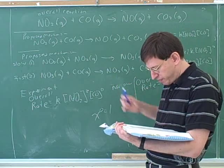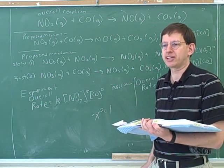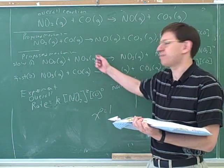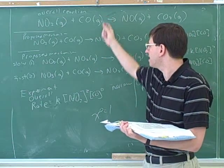So what are the steps for checking a proposed mechanism? First, make sure the elementary steps add up to the overall reaction. We practiced that earlier. Actually, we were lazy and we didn't practice that here. We should have checked if these two steps add up to this. Do these two steps really add up to this?